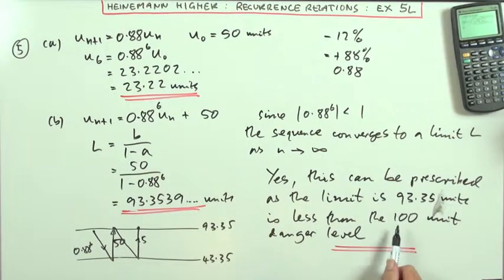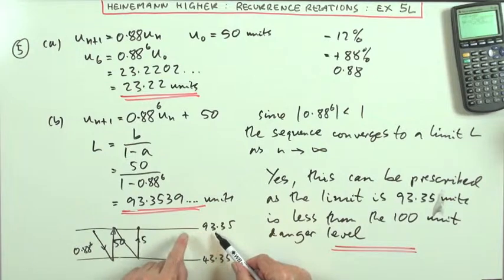But in this case it's all right, because it says, will it ever go over 100? No, because that 93 is the absolute top value of that dynamic limit, not the 43 which is at the bottom.